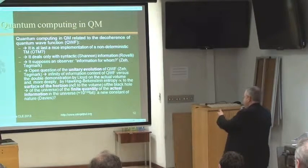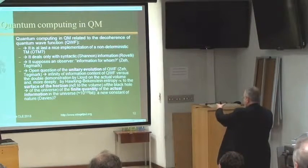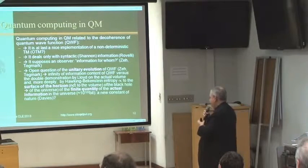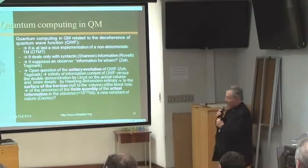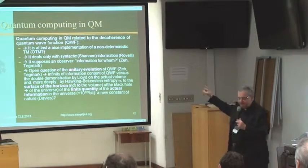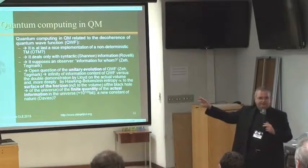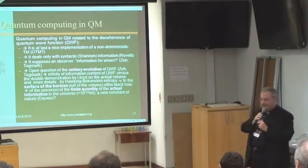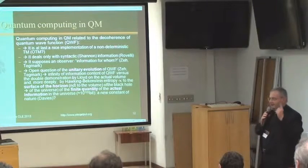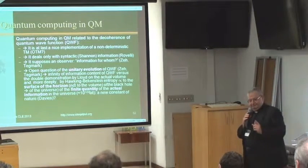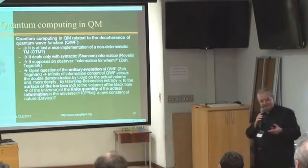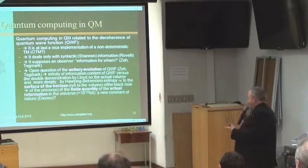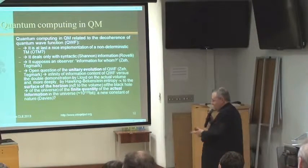The finite quantity of actual information in the universe is — pay attention — of the same order of magnitude: 10 to the power 122. Davis, in his last book, proposed if this is not a new constant of nature. But in any case, if we have a boundary on the actual information of the universe, how is it possible to speak of the unitary evolution of the quantum wave function?